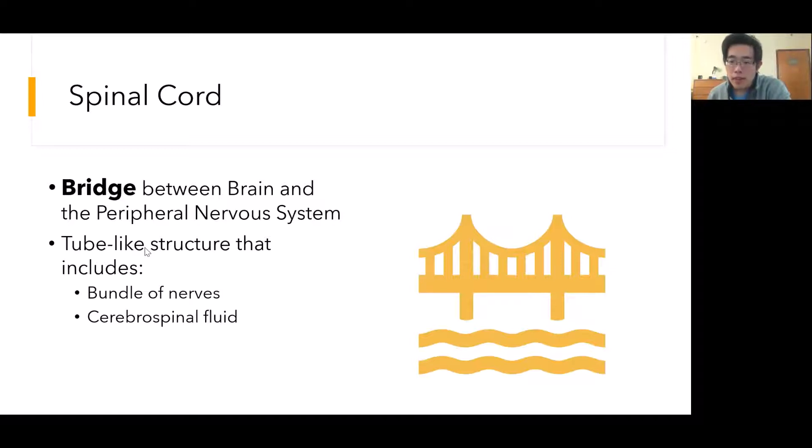Our spinal cord serves as the bridge between these two components. Our definition of the spinal cord is a tube-like structure that consists of a bundle of nerves and cerebrospinal fluid. Cerebrospinal fluid is a clear, colorless fluid that nourishes the nerves.